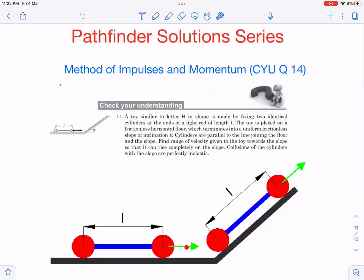The question asks: find the range of velocity given to the toy towards the slope so that it can rise completely on the slope. Let's say the initial velocity is v. We need to find the range of v. A very important point is that collisions of the cylinders with the slope are perfectly inelastic.